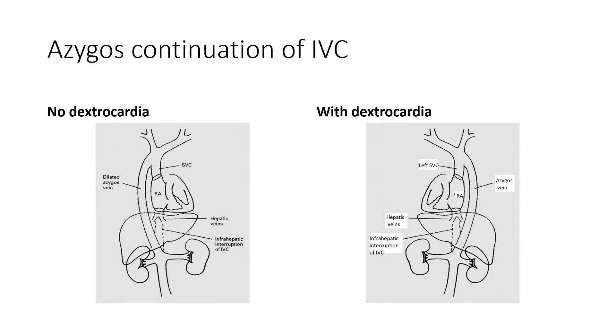In these two figures, you can see azygos continuation of the inferior vena cava: one patient with levocardia showing azygos continuation to the SVC, and another patient with dextrocardia like our patient, with azygos continuation to the SVC and the hepatic lobe on the left side of the patient.